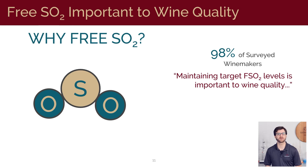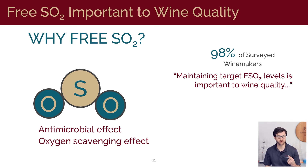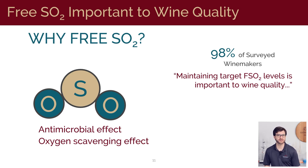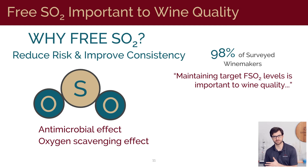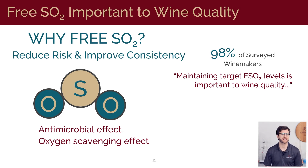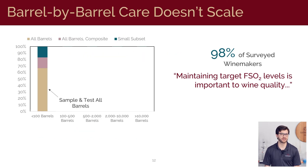So what is it about free SO2 that makes it so important for barrel aging? We always hear that it's special because it's both an antimicrobial and an antioxidant. I like to think of sulfur dioxide's role in more general terms: free SO2 reduces risk and improves consistency. We also asked these winemakers how they sample their barrels in order to maintain these target free SO2 levels, and as you'd expect, this changed depending on how big their cellar was.